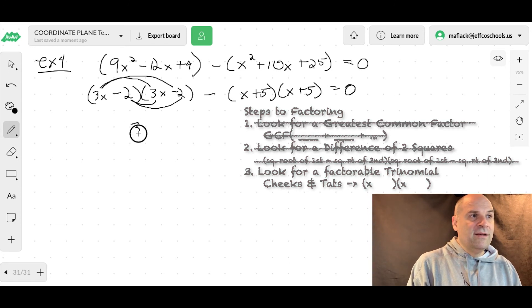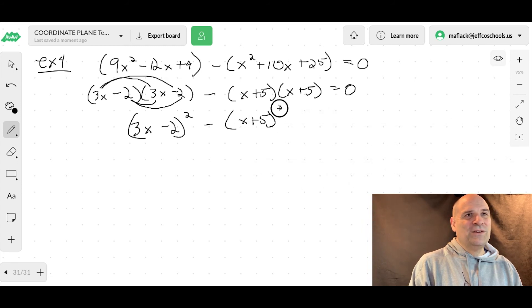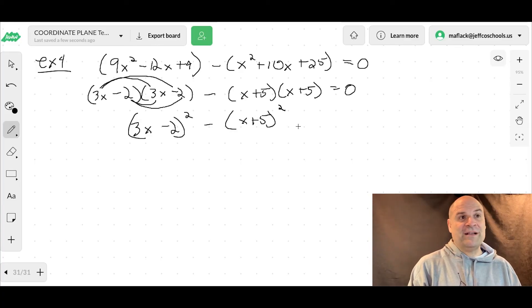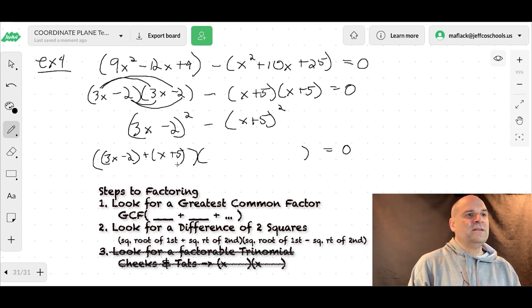Okay, so now we have a difference of two squares. Because look, here's a square minus another square. So how do we factor that? Well, the square to the first plus the square to the second times the square to the first minus the square to the second. So this is 3x minus 2 plus x plus 5 times 3x minus 2 minus x plus 5. Okay, so remember with this minus here, it's a little complicated, so we're going to chicken scratch all these guys.